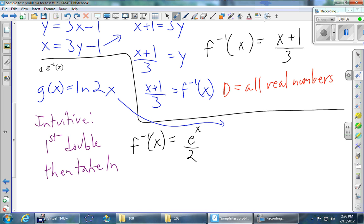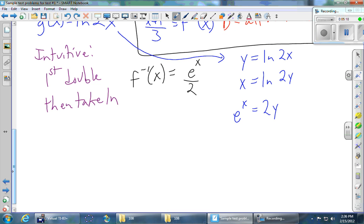If we want a procedural way, instead of g of x, we can call it y. Interchange the x's and y's. Solve the new equation for y. This guy becomes e to the x equals 2y. That's the definition of the ln equation. And then solving for y, we just need to divide by 2. And then finally replace y with f inverse of x. And you can see again, the procedure gives the same answer as the intuitive way.